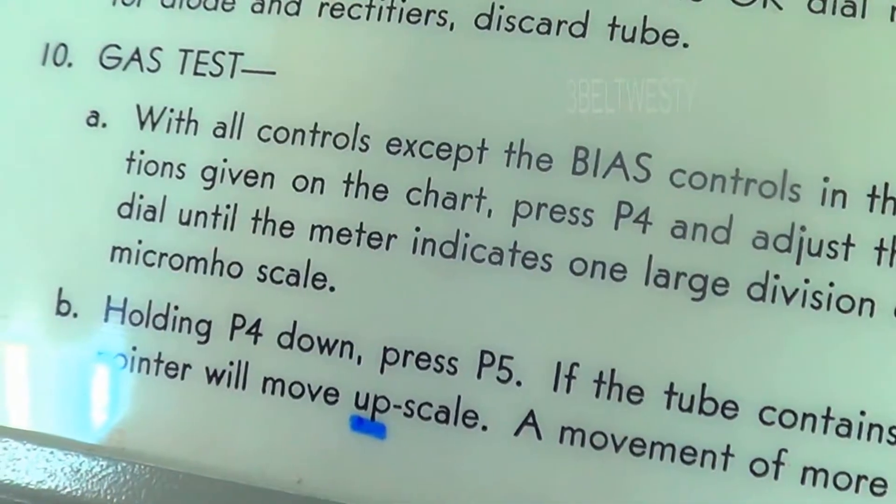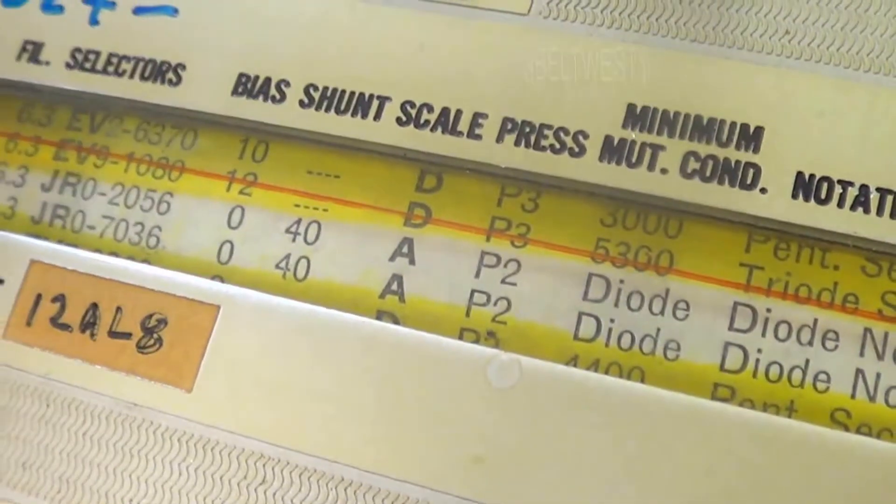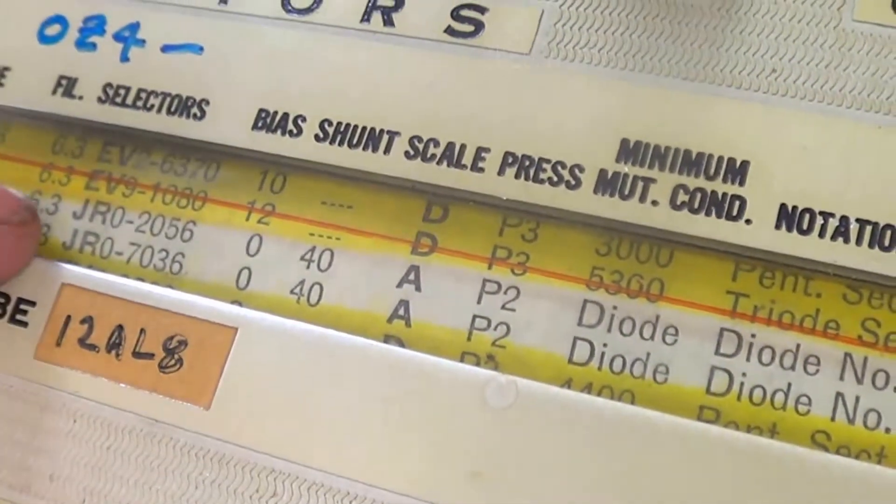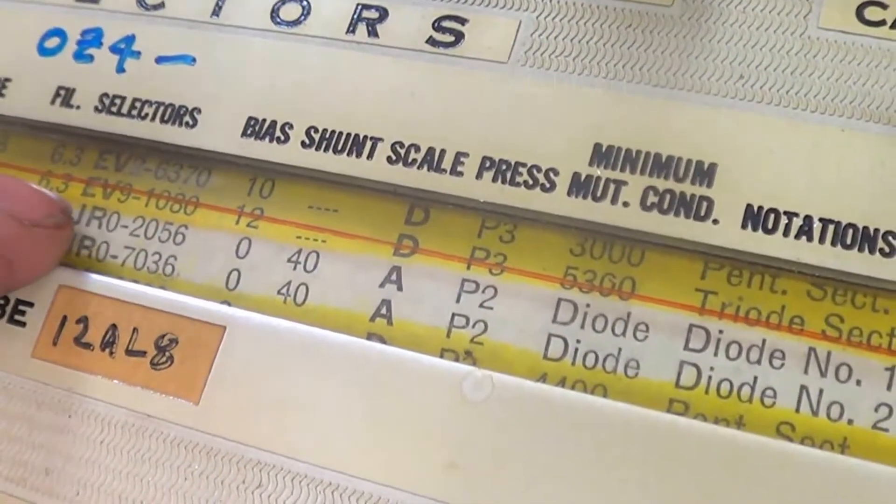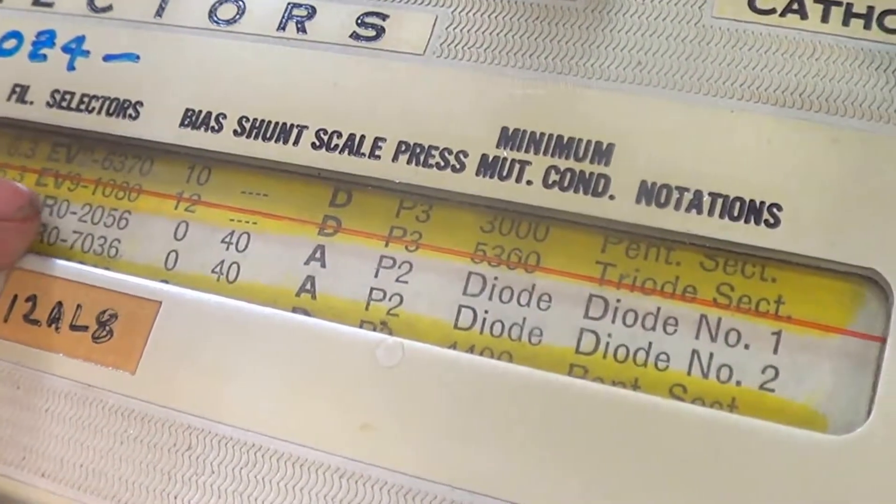I'm going to test for gas here. We've got a 6EA8 tube, filament 6.3 volts, tube tester set to EV91080 through here.